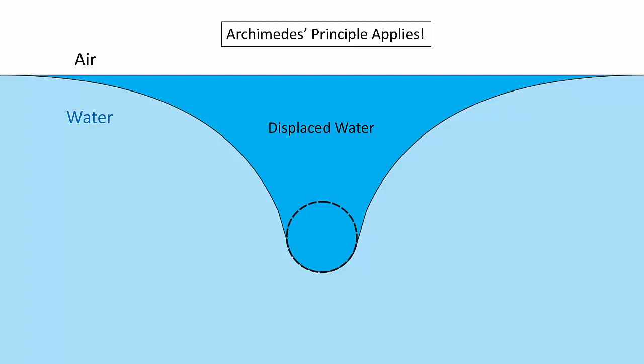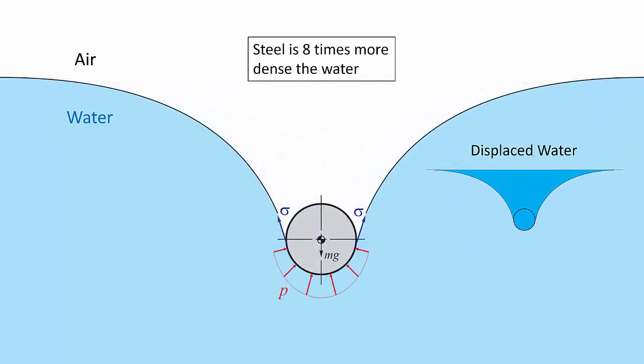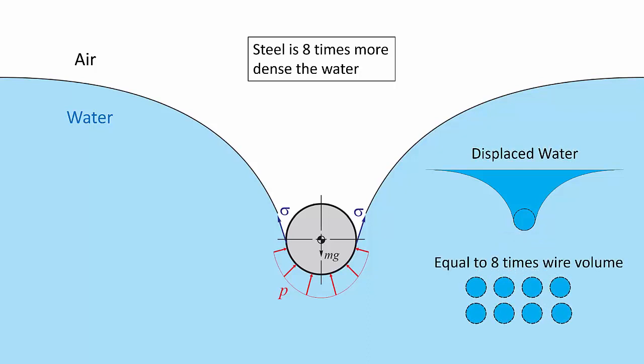So what I'm telling you is that the buoyancy force that the ring feels is equal to the weight of this dark blue area, the total displacement. Now the density of steel wire is about eight times greater than that of water. So for the weight of the displaced water to equal the weight of the wire, the volume of the displaced water has to be eight times that of the wire. And that is indeed the case here.